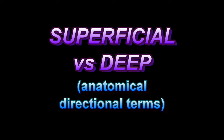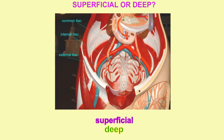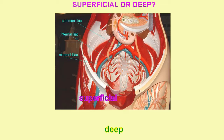Anatomists use precise terms, and the term superficial can mean close to the surface of the body, where deep refers to away from the surface of the body.